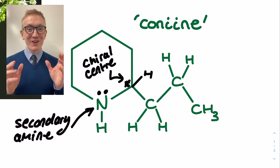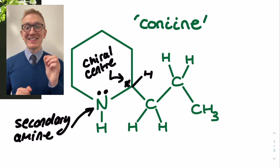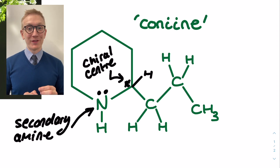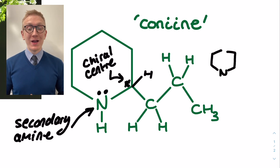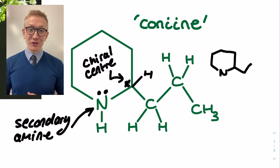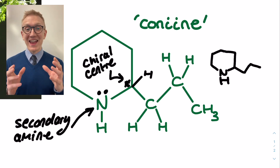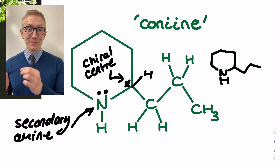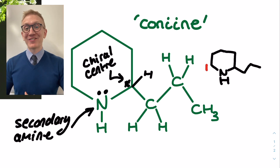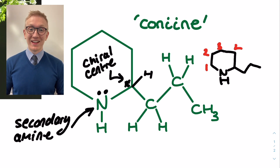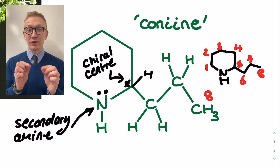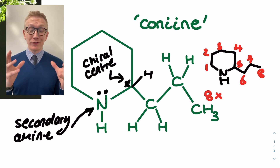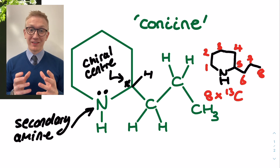Finally, for our coniine, it has eight different carbon environments, which means if I was to try and predict how many peaks it would show in a carbon-13 NMR spectrum, I should anticipate that it would have eight separate peaks. And you can see with a little extra sketch of the coniine that I've shown here, I can identify all of those peaks. It does boil down to the fact that it's got that unsymmetrical ring, which is why it has this big boost to the number of peaks I should anticipate.